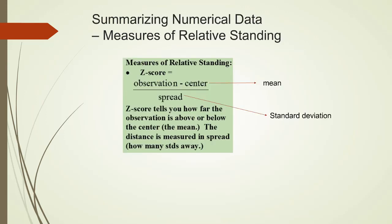The last type of measure is for relative standing. We will focus on only one measure of relative standing here. That's the z-score, which is equal to the observation, subtract the center, and then divide by the spread. The center here is usually the mean, and the spread is usually the standard deviation. The z-score tells us how far this particular observation is above or below the center of the series. This distance is also measured in terms of the spread, how many standard deviations away.